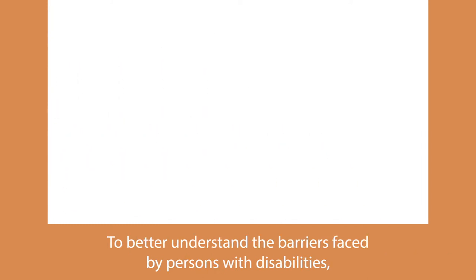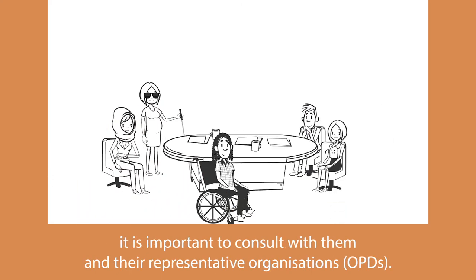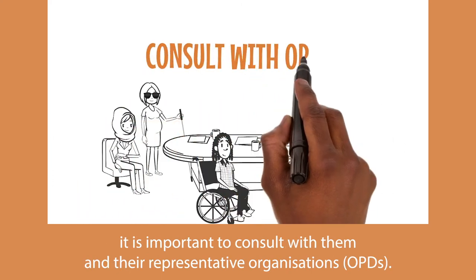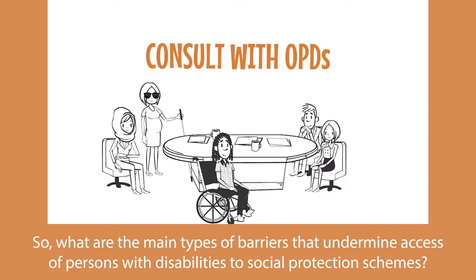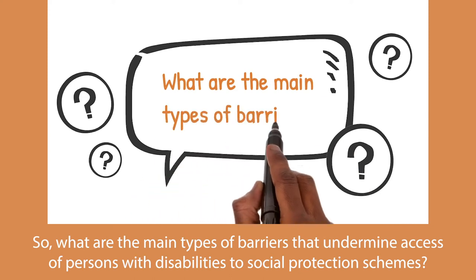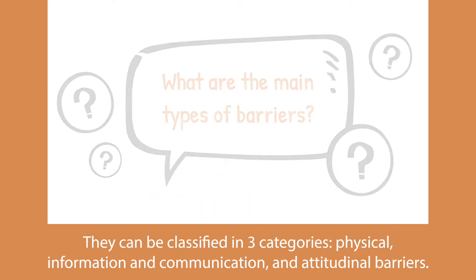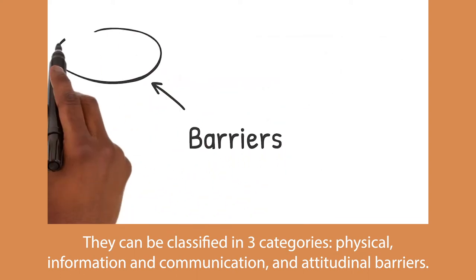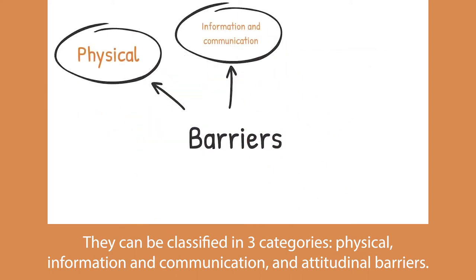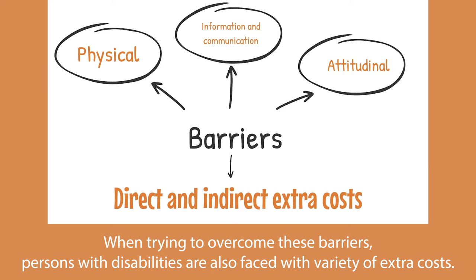To better understand the barriers faced by persons with disabilities, it is important to consult with them and their representative organizations. The main types of barriers that undermine access of persons with disabilities to social protection schemes can be classified in three categories – physical, information and communication, and attitudinal barriers. When trying to overcome these barriers, persons with disabilities also face a variety of extra costs.